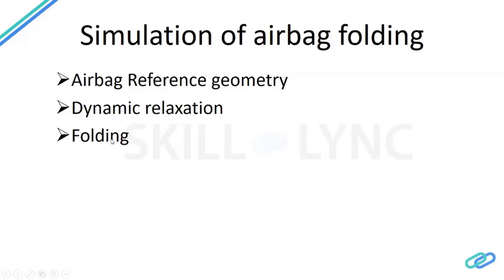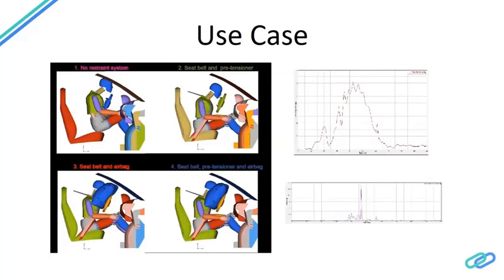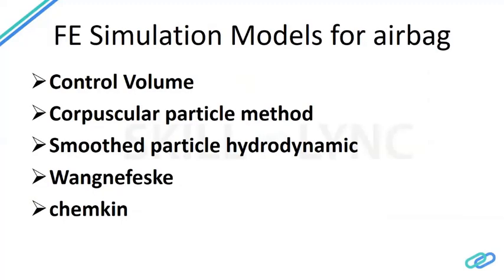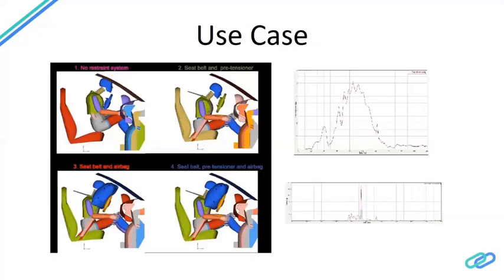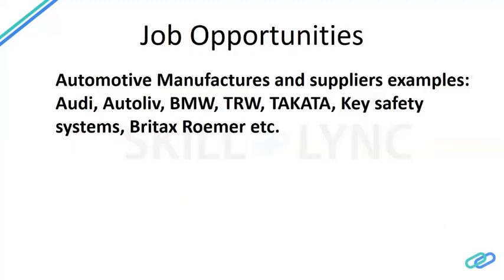Dynamic relaxation is performed between each folding step. To summarize, we've covered how to develop the finite element model, how to simulate the airbag, and what different models are available for building and deploying airbag systems. The most important parameter to correlate an airbag is leakage — for the passenger airbag this includes vent leakage, and both driver and passenger airbags have seam leakage and fabric leakage. Working on fabric leakage is essential for proper correlation of the peaks.